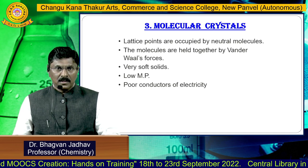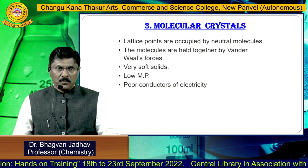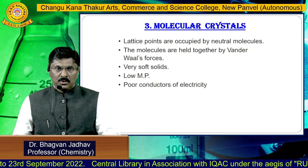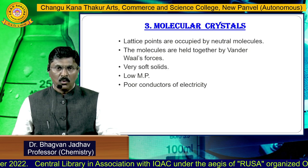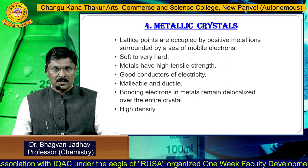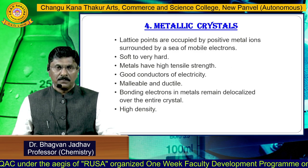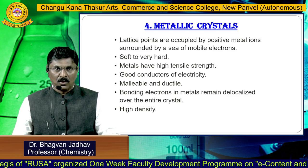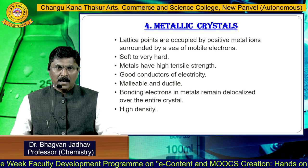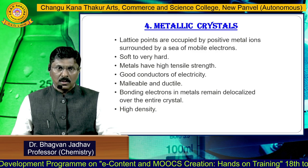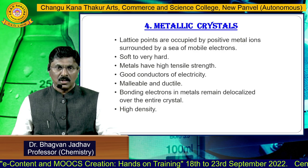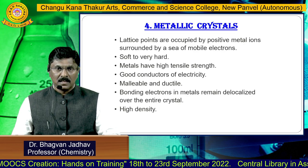The third type of crystals are the molecular crystals, in which the lattice points are occupied by neutral molecules. These crystals are very soft solids, have a low melting point, and are poor conductors of electricity. The fourth type of crystals are the metallic crystals, in which the lattice points are occupied by positive metal ions surrounded by a sea of mobile electrons. Metallic crystals range from soft to very hard, have high tensile strength, are good conductors of electricity, are malleable and ductile, and the bonding electrons remain delocalized over the entire crystal. Metallic crystals have very high density.